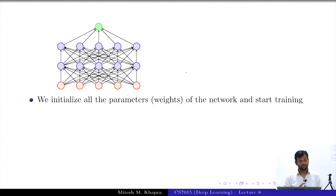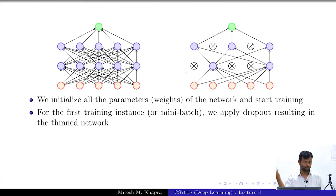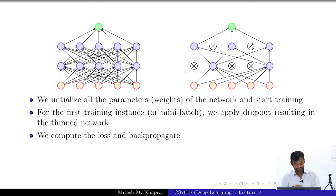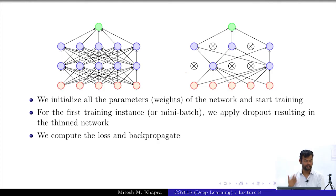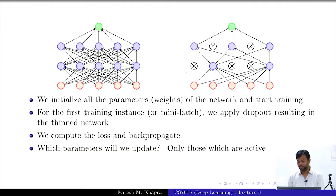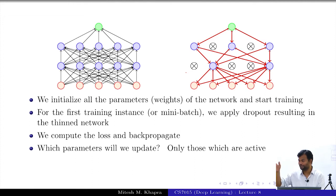We initialize all the parameters of the network and start training. For the first training instance, we apply dropout resulting in a thinned network, then do forward propagation and compute the loss. Then we back-propagate, but only through the paths which actually participated — only updating the weights of nodes active in this thinned network.